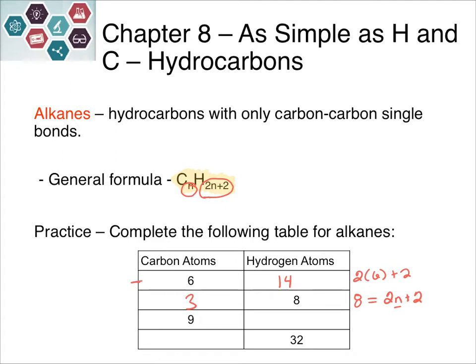For 9 carbon atoms: 2 times 9 plus 2 gives 20 hydrogen atoms. For 32 hydrogens: 2n plus 2 equals 32, so there must be 15 carbons to have 32 hydrogens. This ratio comes about because carbon always has to have four bonds.